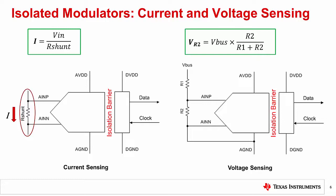While current sensing is the most common application for isolated modulators, they can also be used for voltage sensing. To learn how to optimize the input of an isolated modulator for voltage sensing, please check the TI design library. For additional isolated modulator resources, please visit ti.com/isolation and click on the isolated ADCs link.